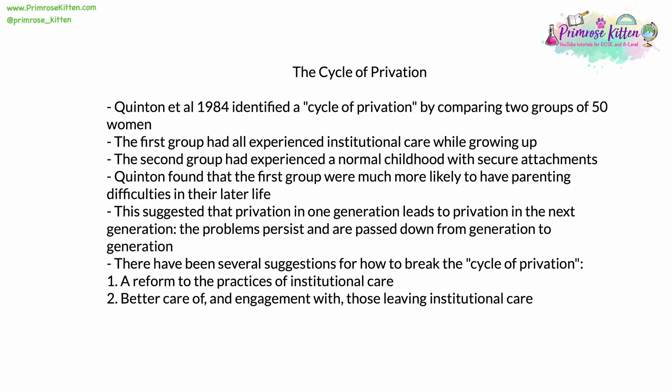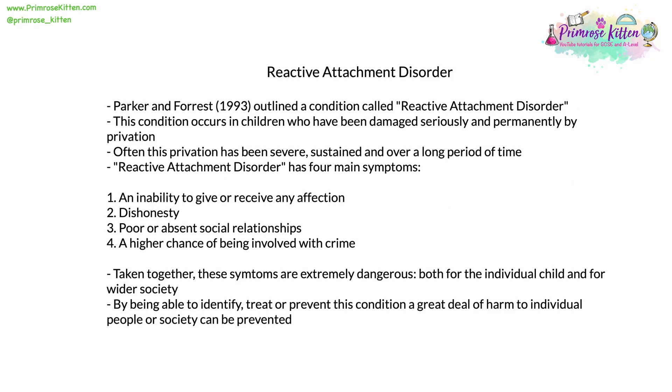There have been several suggestions for how to break the cycle of privation. Two of these are: firstly, a reform to the practices of institutional care to make it more likely that children in that care will form secure attachments; and secondly, better care of and engagement with those leaving institutional care, as it's possible to reverse the effects of privation. Parker and Forrest, writing in 1993, outlined a condition they called Reactive Attachment Disorder, which occurs in children who have been seriously and permanently damaged by privation.